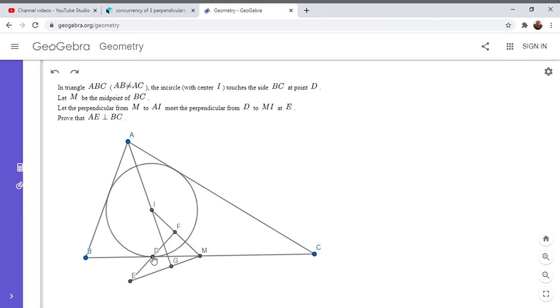And so my idea is, first I'm going to drop an altitude from A to BC. And I want to show that E lies on that perpendicular line. So I've dropped a perpendicular H from A to BC. And I want to show that E lies on the line AH. So what I want to do is I want to intersect MI with this altitude. And then whatever that triangle, let's say it intersects at point J, then I want to show that D is the orthocenter of JME.